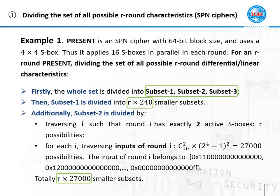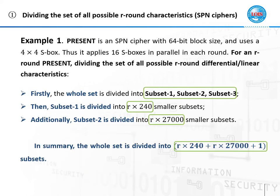Similar to the partition of Subset 1, Subset 2 is further divided. When one round has exactly two active S-boxes, there are 27,000 possibilities of inputs of this round. In total, Subset 2 is divided into R×27,000 smaller subsets. Now the set for an R-round PRESENT has been divided.